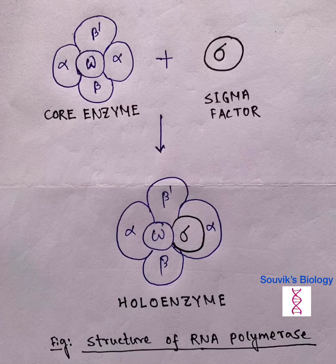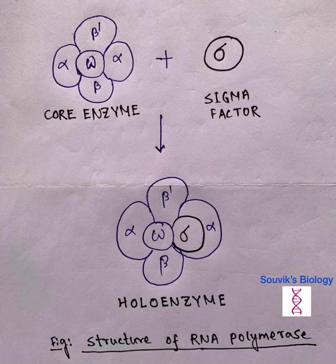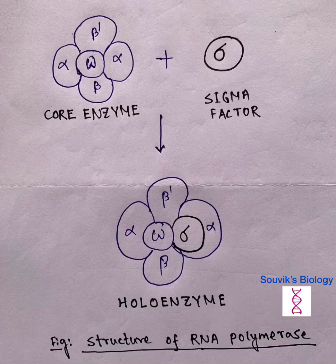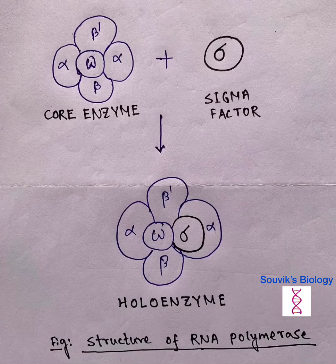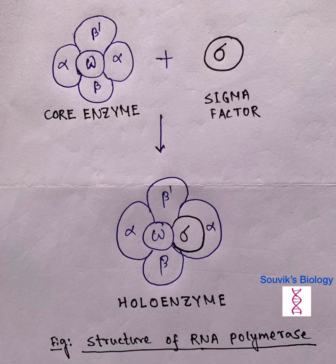The core enzyme binds with the sigma factor and forms the entire complex of RNA polymerase, which is called the holoenzyme. This holoenzyme is the active part of RNA polymerase. This holoenzyme binds with DNA and forms mRNA.